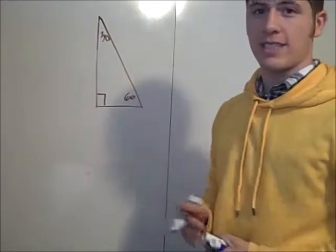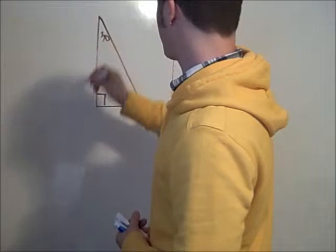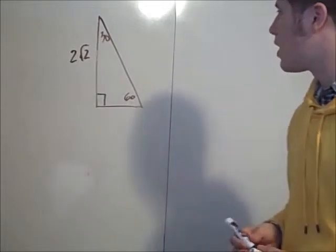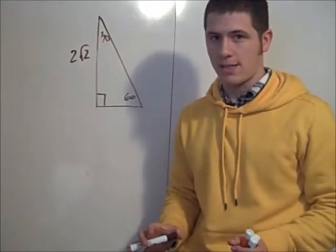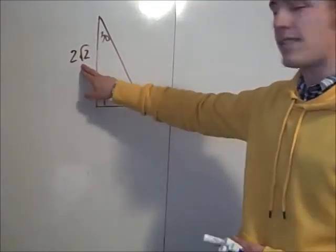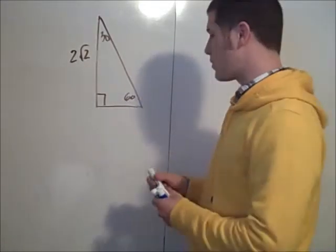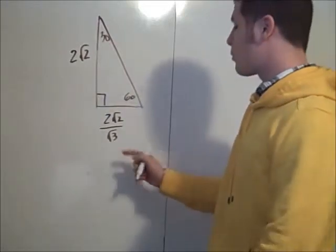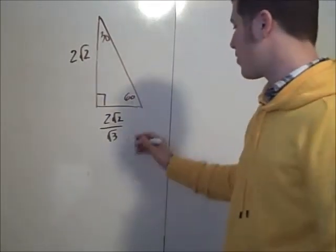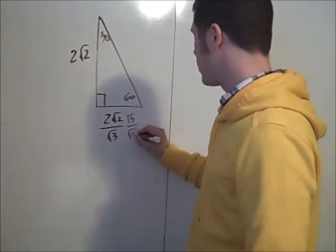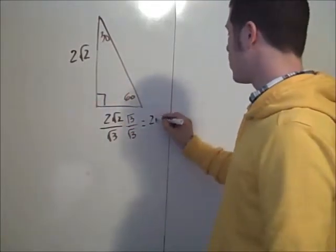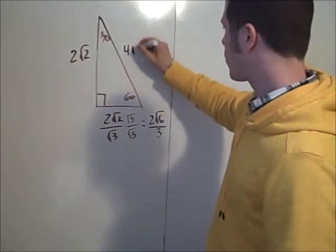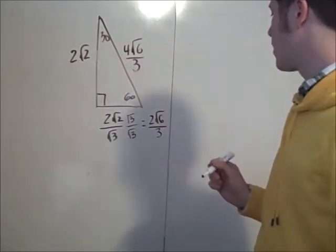Let's do one more. What if the side across from the 60 is 2√2? It's the same process: divide by √3 to get the short side, giving 2√2 divided by √3. Rationalizing by multiplying top and bottom by √3 gives 2√6 over 3. And the hypotenuse is twice that, so 4√6 over 3.